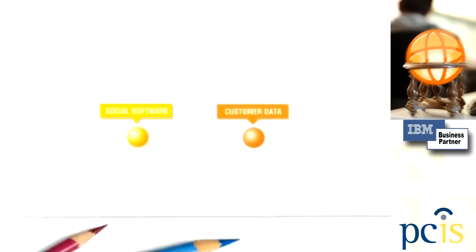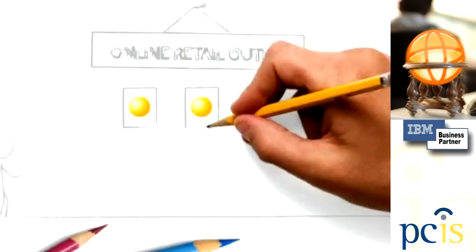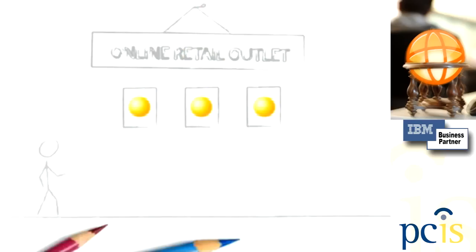Combining social software with customer data, you can change the way you do business. Let's say you're an online retail outlet. In your customer comments, you notice that people aren't too happy with one of your products. That's valuable information that you can use to quickly adjust your inventory by adding new items and taking out unpopular ones.